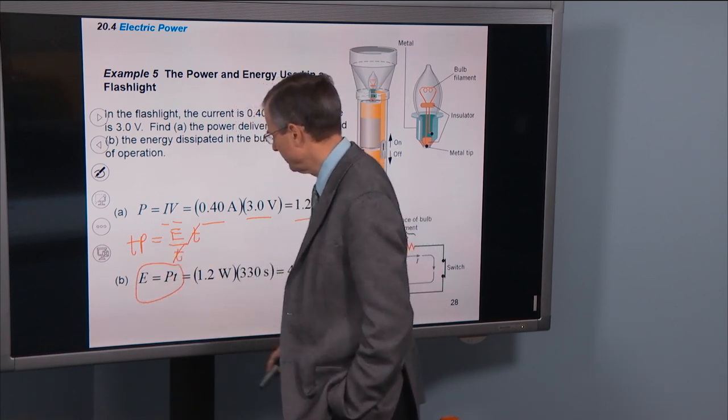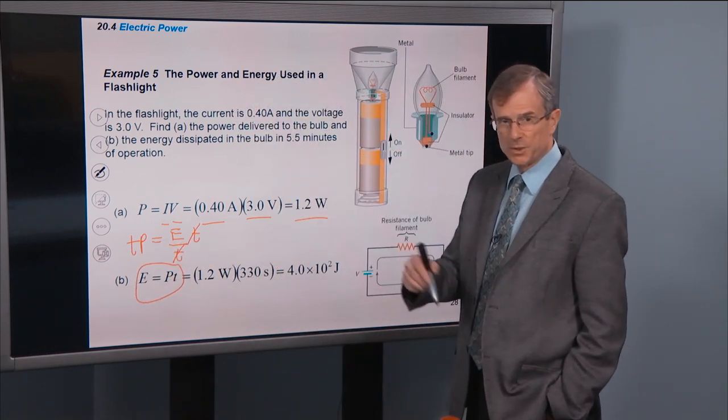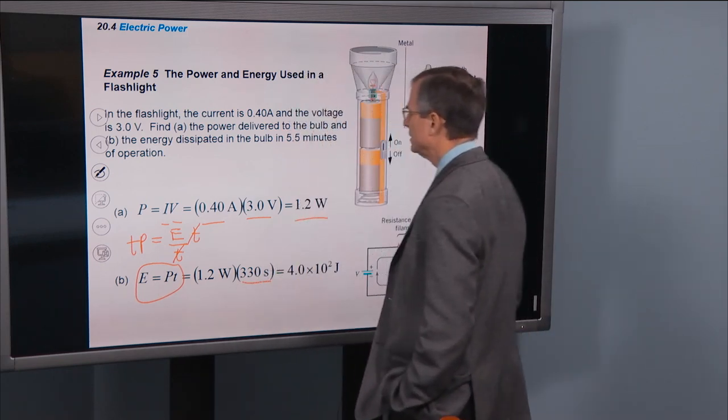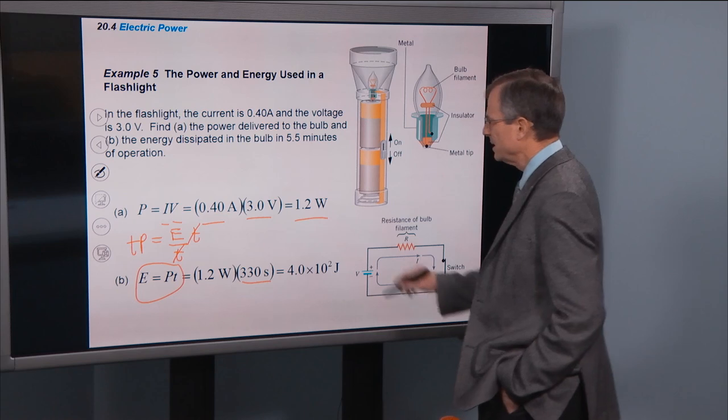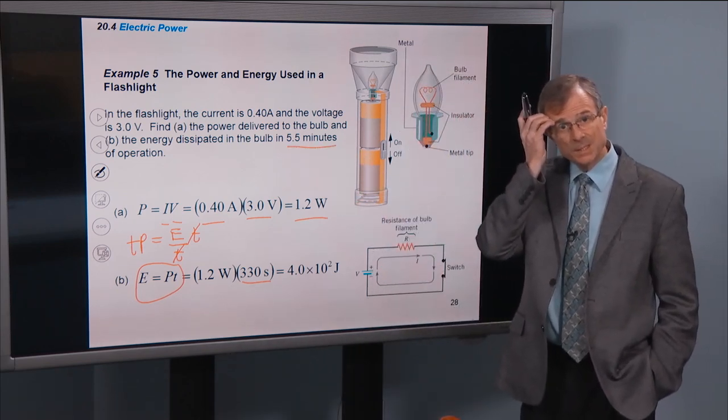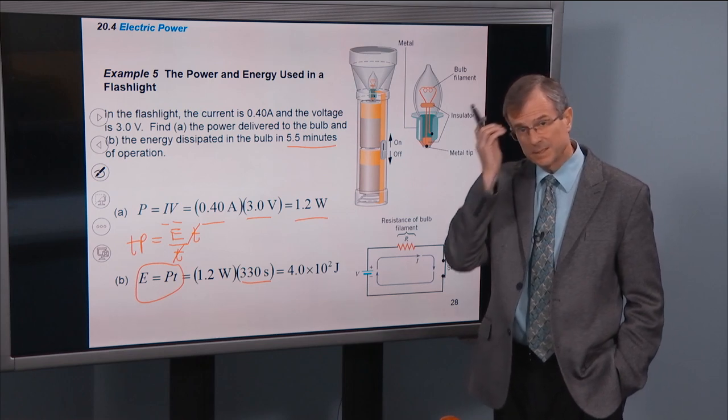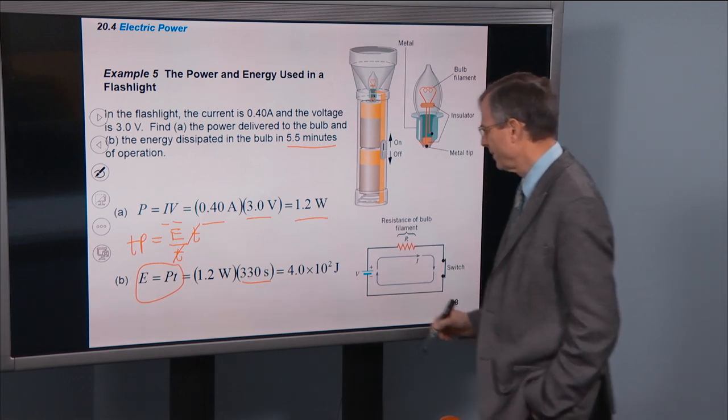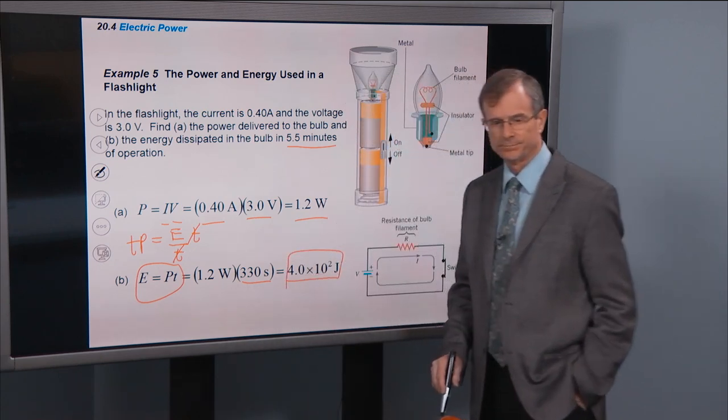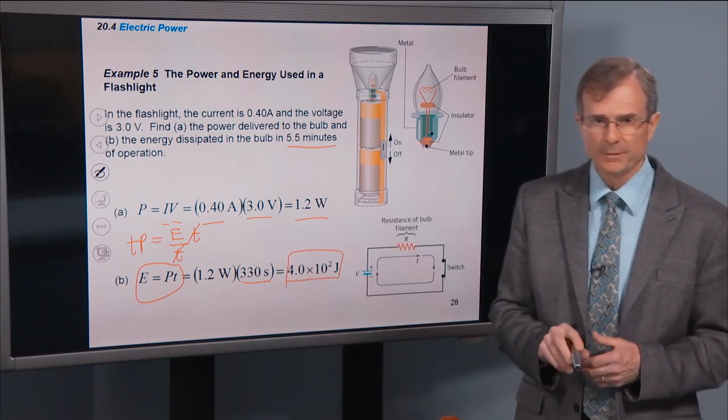So that's this equation right here. And the power we just worked out is 1.2 watts. The time is 330 seconds. That's the equivalent of 5.5 minutes. Times 60 seconds per minute gives you 330 seconds. And that's how much energy you're going to dissipate in that flashlight.